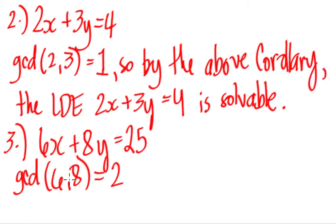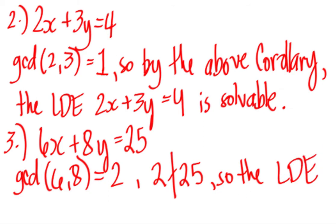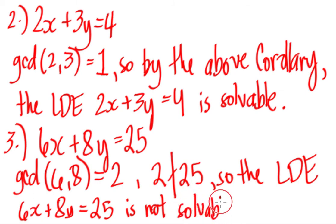Since 2 is the GCD, does 2 divide 25 or is 2 a factor of 25? Well, you can see and we can verify that it is not. 2 does not divide 25 or 2 is not a factor of 25. So by the theorem, by our previous theorem that we have shown, we can say the linear diophantine equation 6x plus 8y equals 25 is not solvable or it doesn't have any solution.